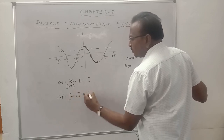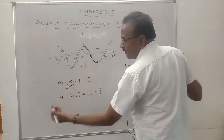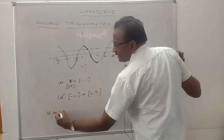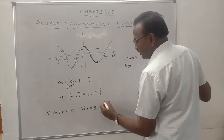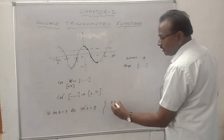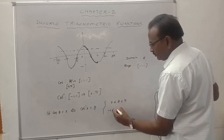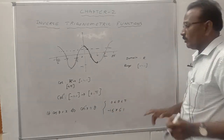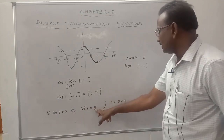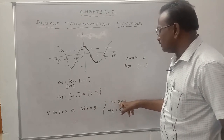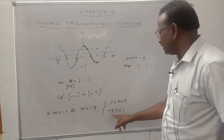Cosine inverse is defined from the closed interval minus 1 to 1 to the closed interval 0 to pi. By definition: cos theta equals x if and only if cos inverse x equals theta, where theta lies in the closed interval 0 to pi and x lies in the closed interval minus 1 to 1. The range of cos inverse x is the closed interval 0 to pi, and the domain is the closed interval minus 1 to 1.